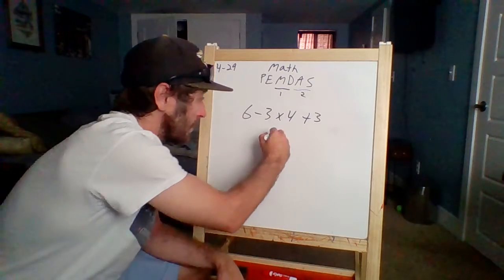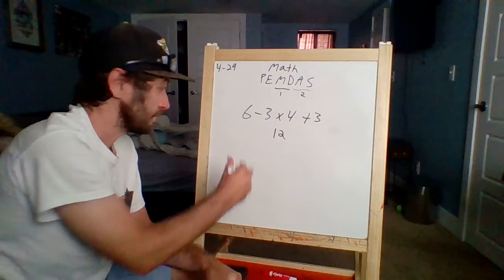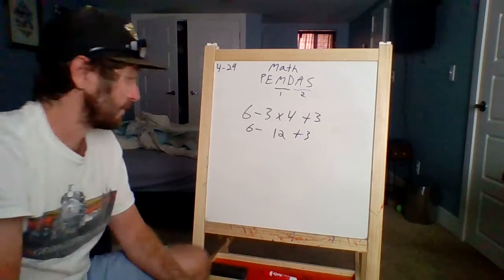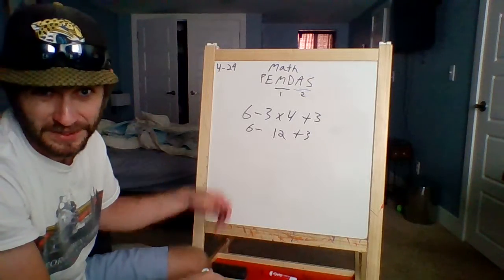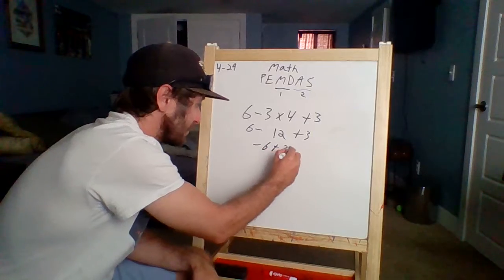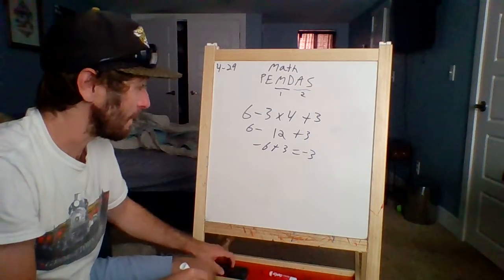Three times four is 12, right? Six minus 12 plus three. Well, we're going to get into a negative number. And we're not even there yet, but it doesn't matter. Six minus 12 is negative six plus three equals negative three. But still, the steps are what matters.